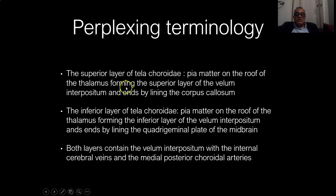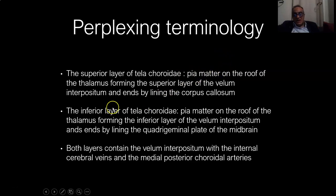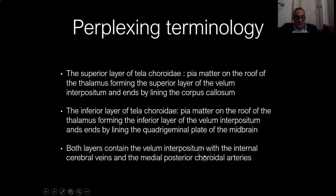The superior layer of tela choroidea is pia mater on the roof of the thalamus, forming the superior layer of the velum interpositum, and it ends by lining the corpus callosum. The inferior layer of tela choroidea is also pia mater on the roof of the thalamus, forming the inferior layer of the velum interpositum, and ends by lining the quadrigeminal plate. Both layers contain the velum interpositum with the internal cerebral veins and medial posterior choroidal arteries in between.